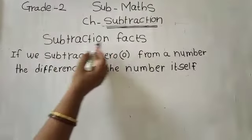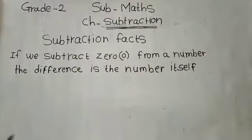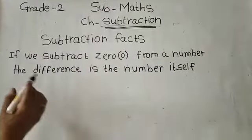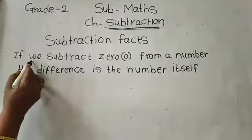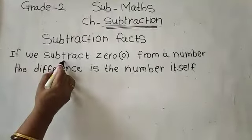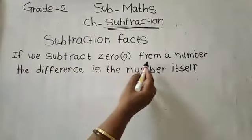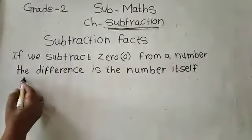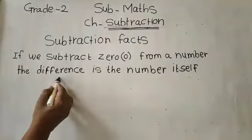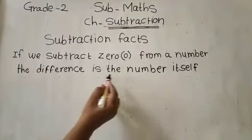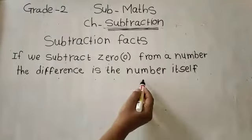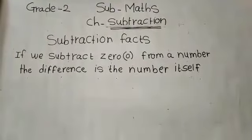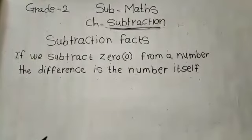What is meant by subtracting facts? It means if we subtract zero from a number, the difference is the number itself. Let's see with an example.